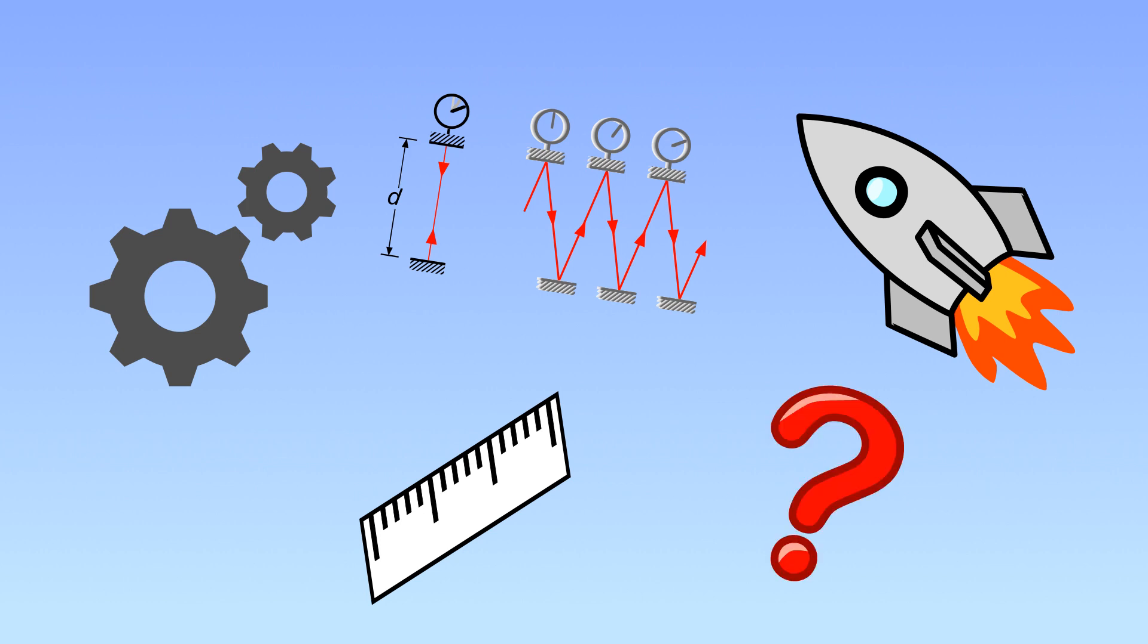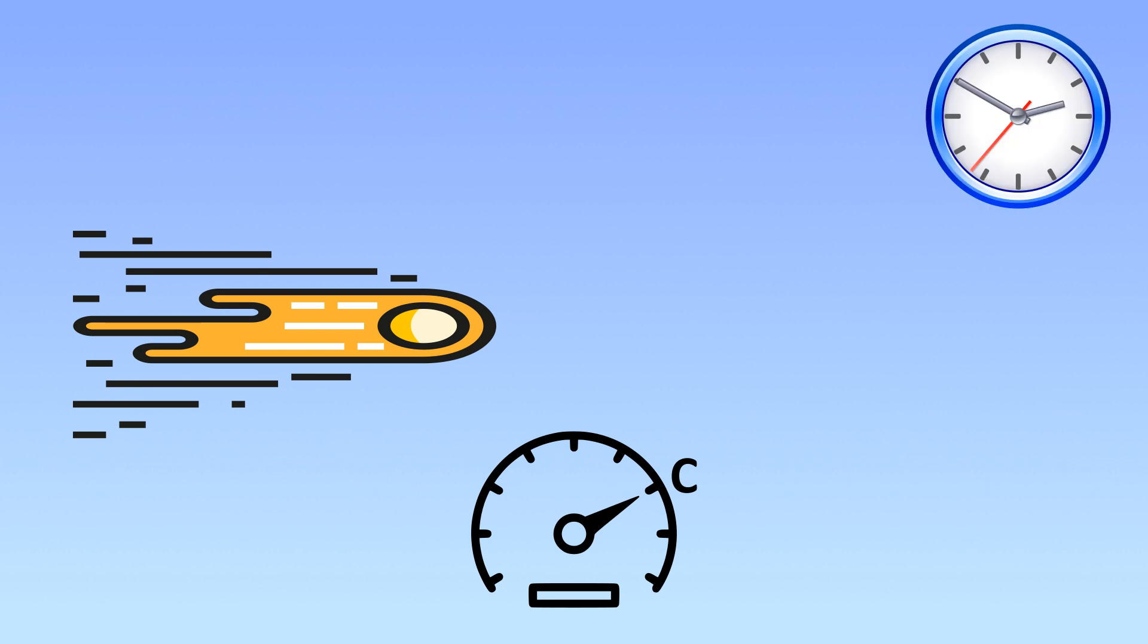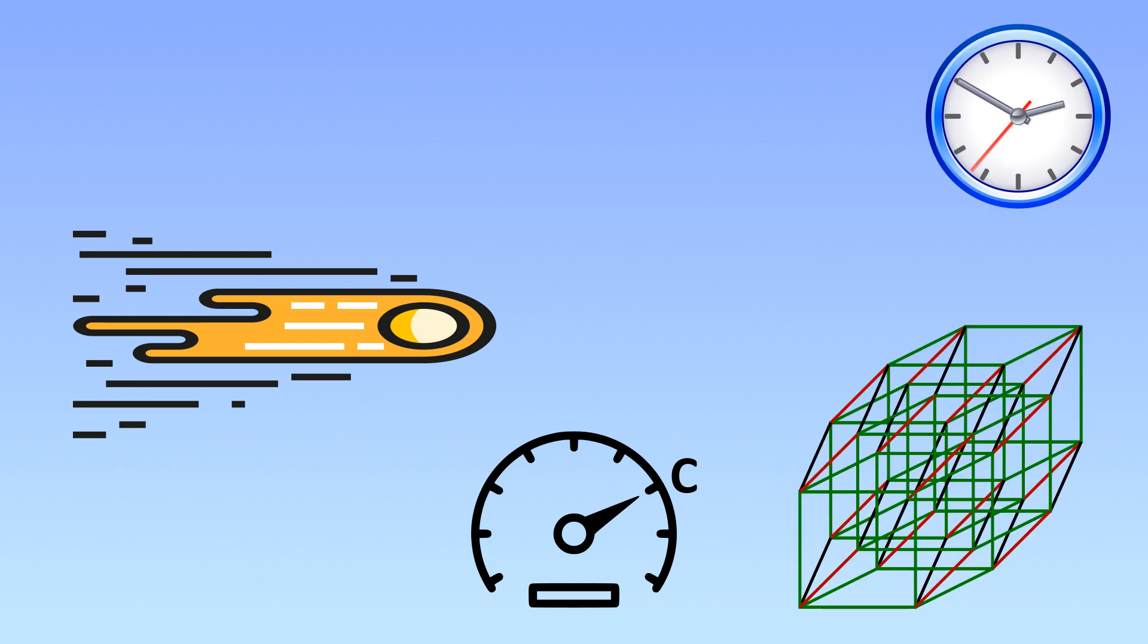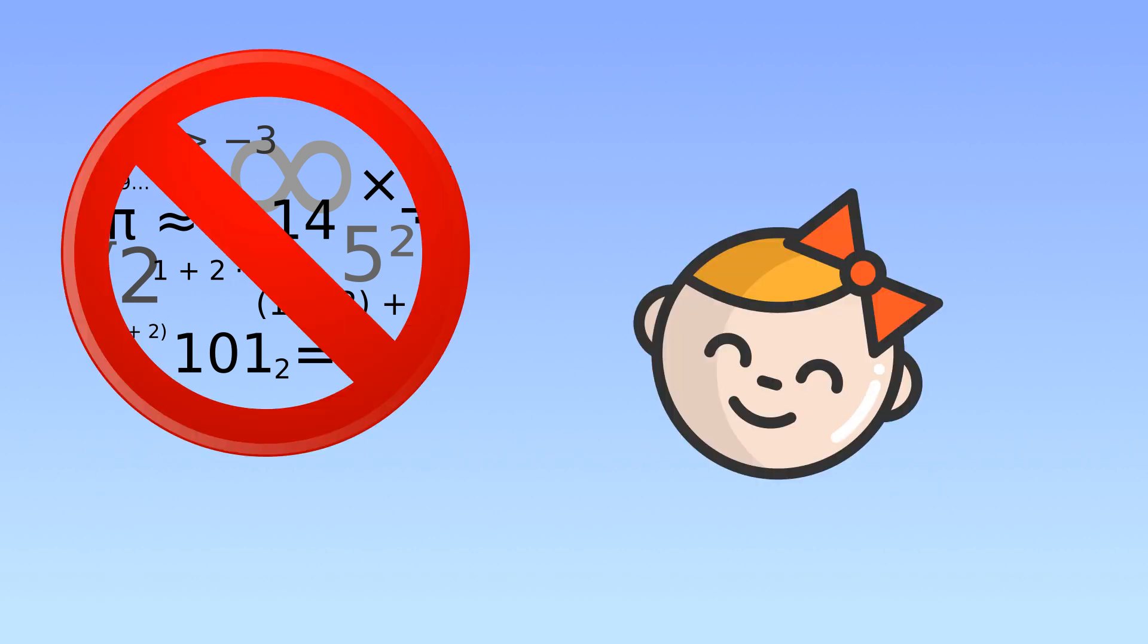To get a good idea of why the universe treats light, speed, and time so strangely, we kind of have to learn how dimensions work. Don't worry, there's no math, and I'll start out simple.